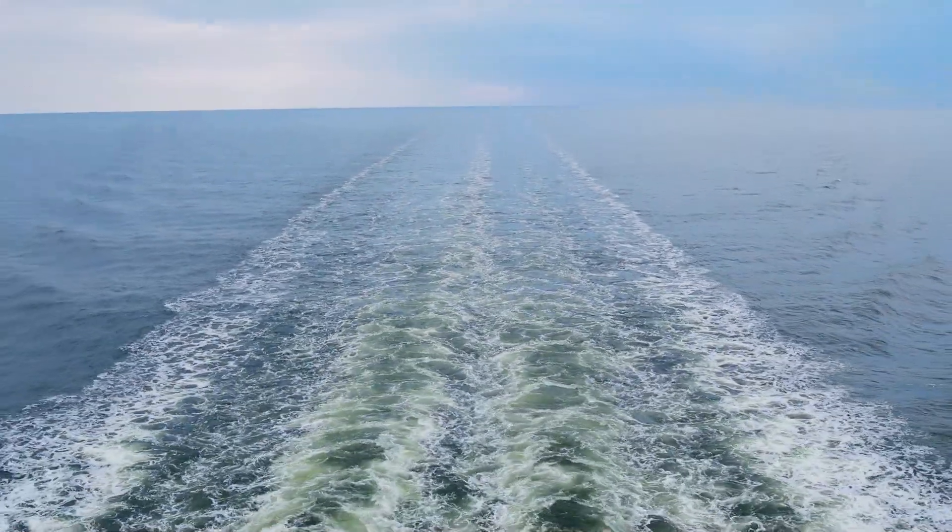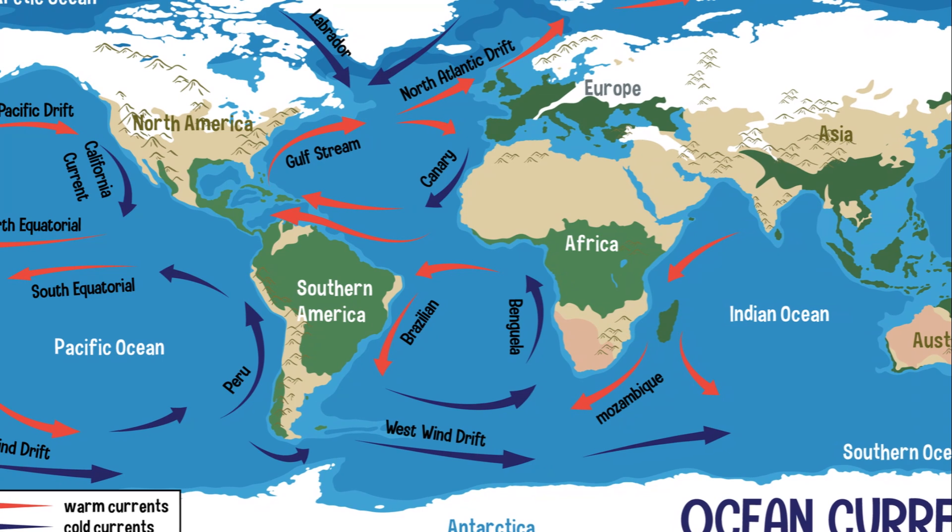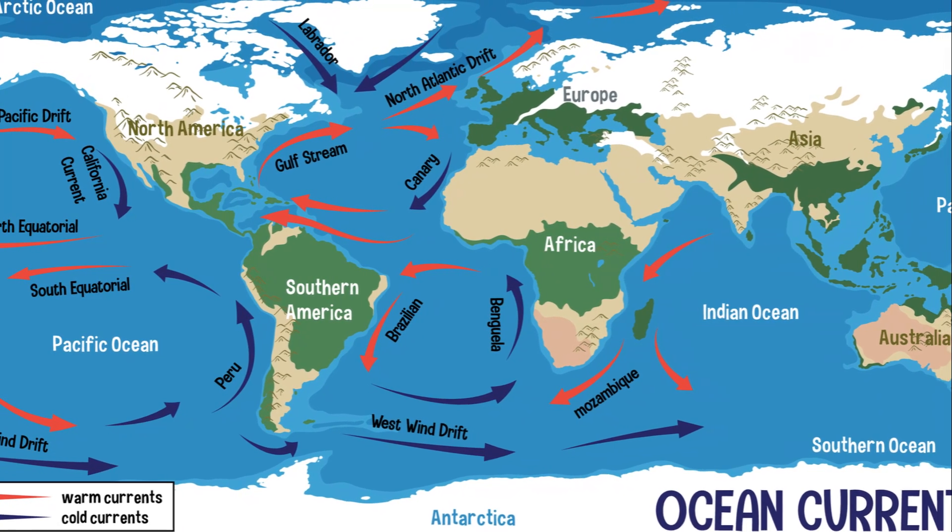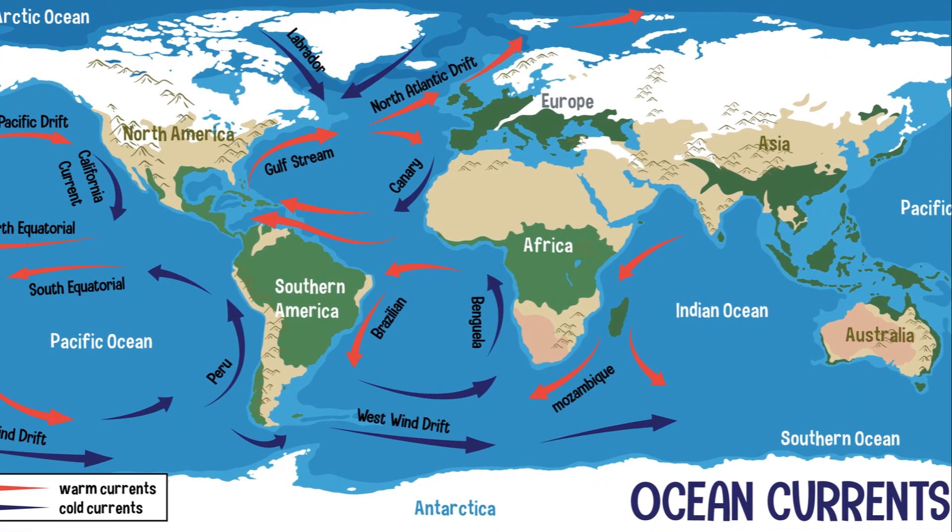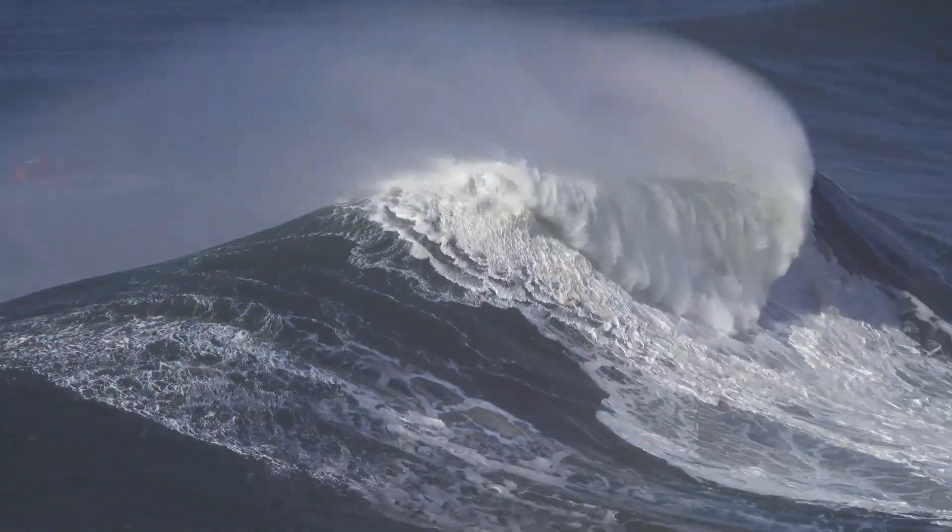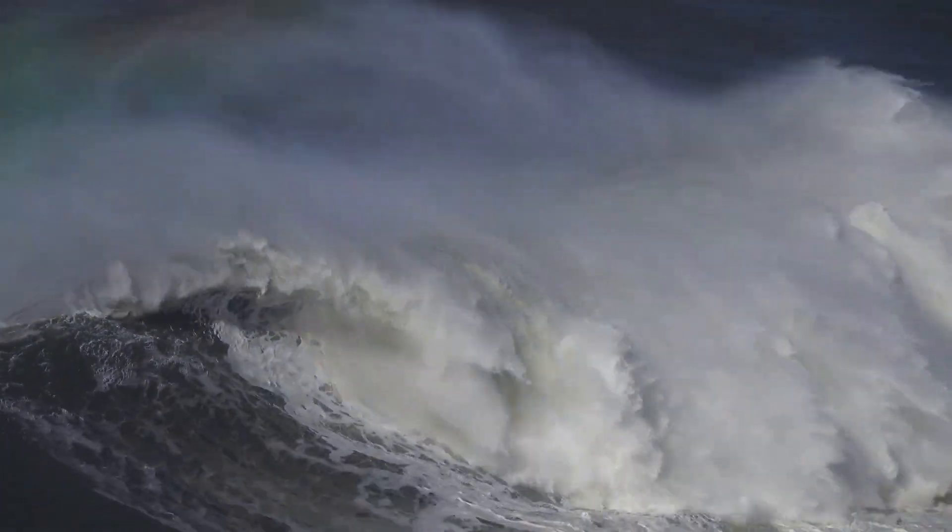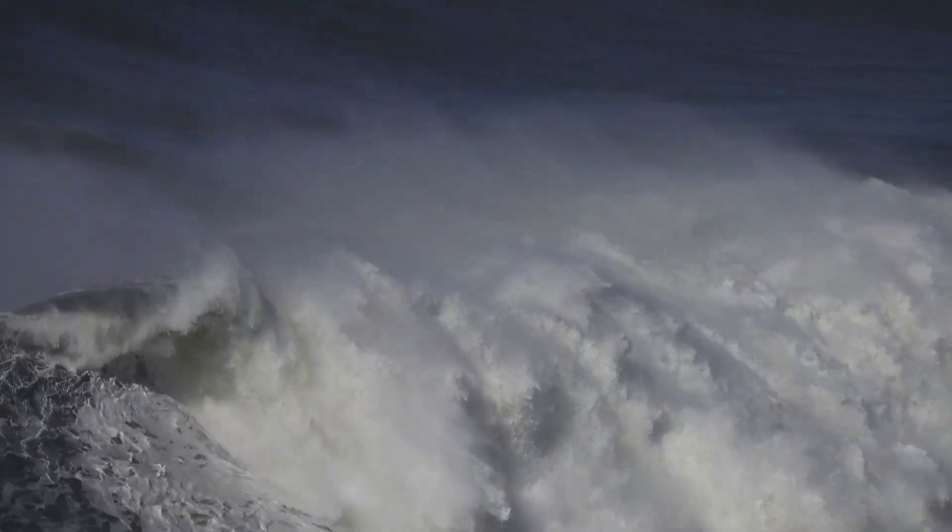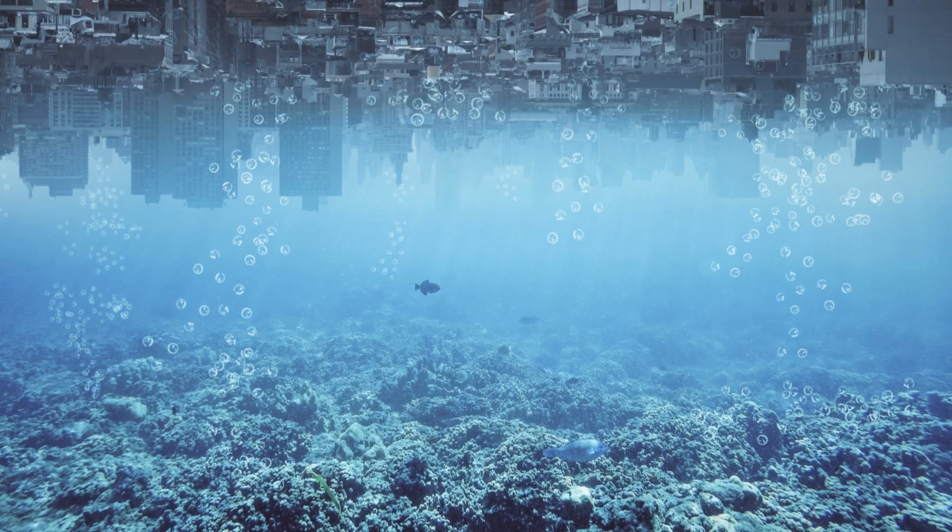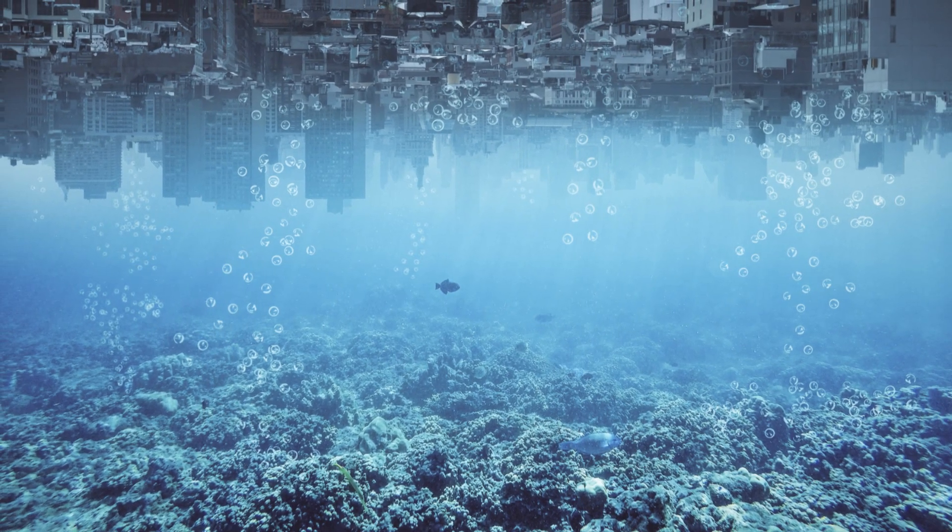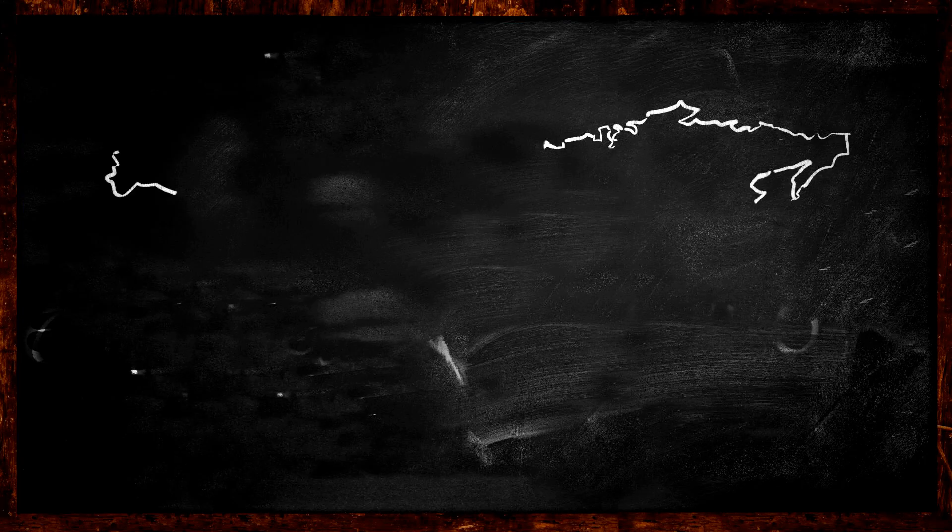The oceans wouldn't stay calm either. As Earth's rotation stops, water would rush toward the poles due to the redistribution of mass. This would trigger mega tsunamis, drowning coastal cities, and reshaping continents. Entire regions like Florida, Bangladesh, and the Netherlands would vanish underwater. The planet's geography would be unrecognizable.